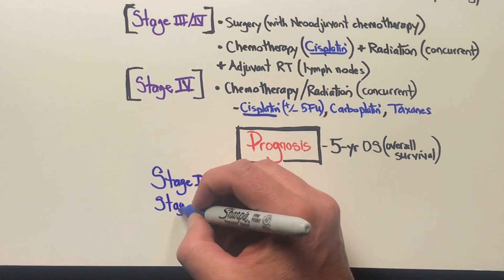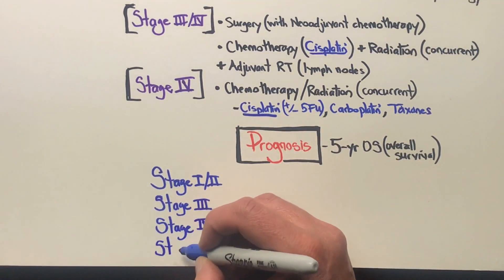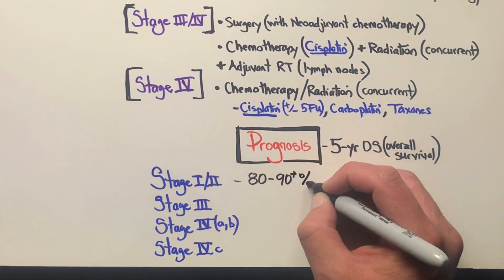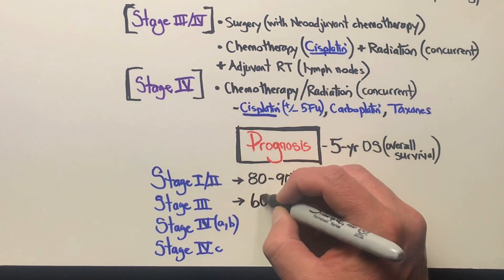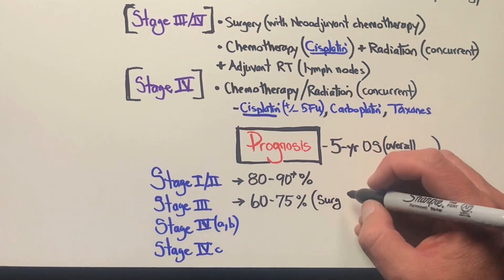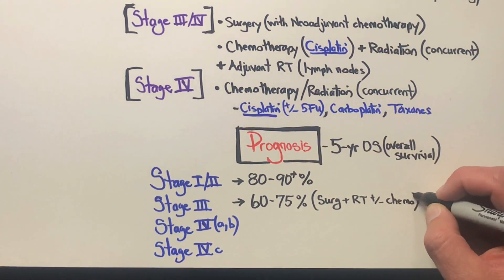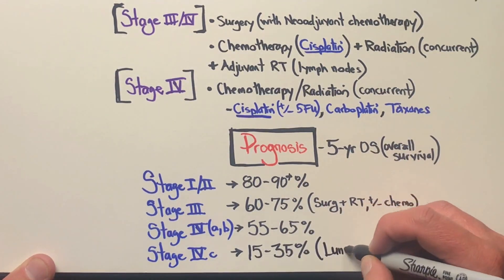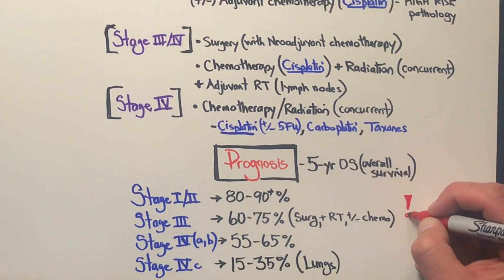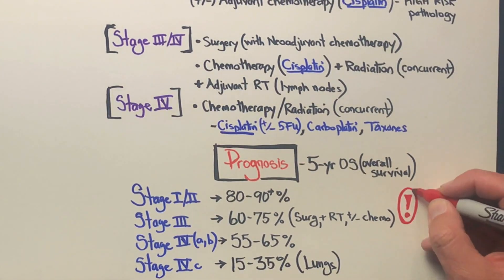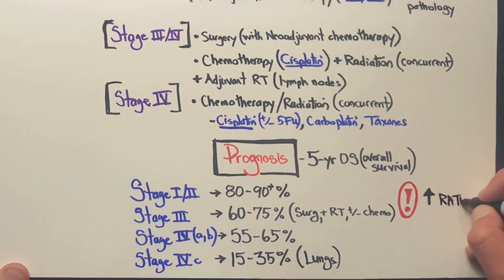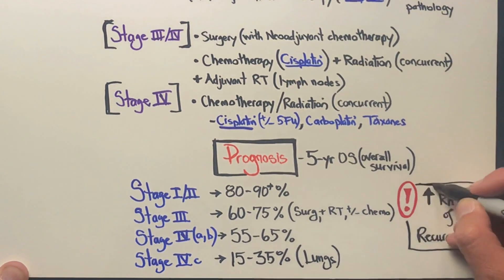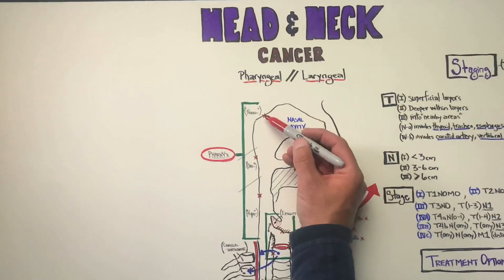For prognosis, we're always looking at five-year overall survival for the various stages. You'll see that the overall survival at five years is quite good — sometimes over 90% in the early stages — but it does decrease into the 60s and 50s for stage 3 and stage 4. Stage 4C, when we have organ involvement, is 15 to 35%. One of the primary issues with head and neck cancers is the recurrence rate, as we can get local recurrences in the lymphatic structures.